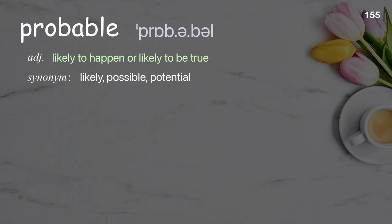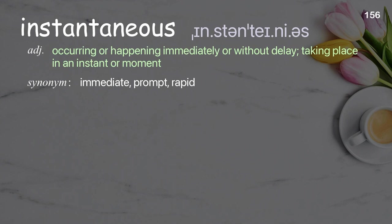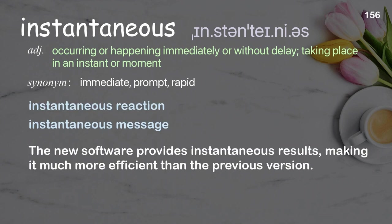Probable: likely to happen or likely to be true. Examples: probable outcome, probable cause of a fire. It seems probable that he has forgotten our scheduled meeting. Instantaneous: occurring or happening immediately or without delay; taking place in an instant or moment. Examples: instantaneous reaction, instantaneous message. The new software provides instantaneous results, making it much more efficient than the previous version.